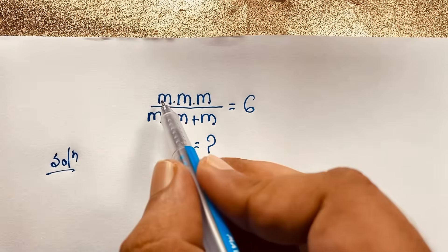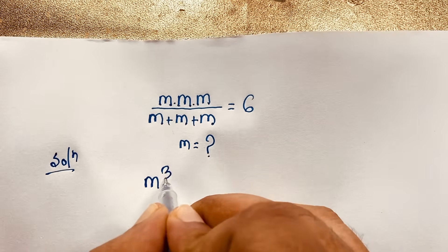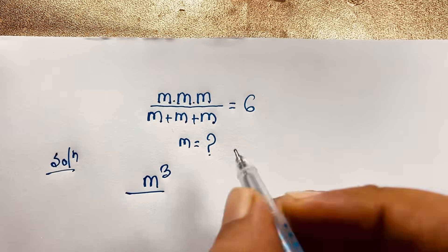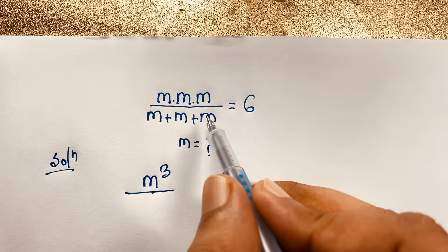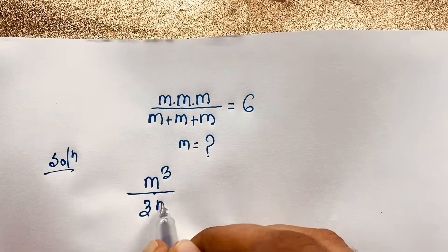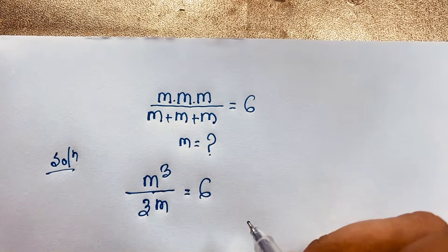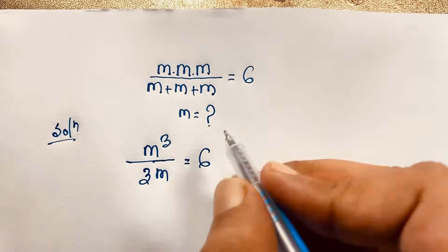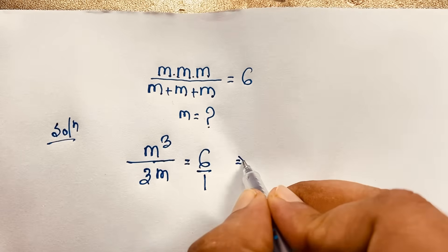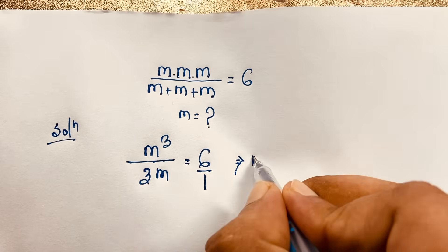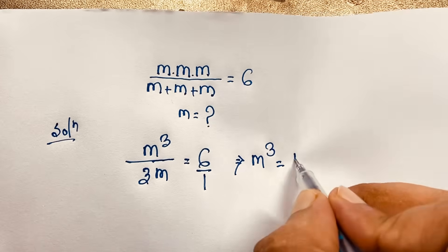Here, m times m times m is m cubed, over m plus m plus m which is 3m, is equal to 6. You can see here the 1 times m cubed, which is m cubed, is equal to 6 times 3m.